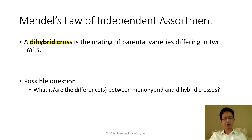Before we talk about Mendel's law of independent assortment, let's discuss dihybrid cross. 'Di' means two, so we are studying two traits at a time. Mendel originally studied one trait at a time, but now he became ambitious and wanted to study two traits simultaneously to see if there were any changes.